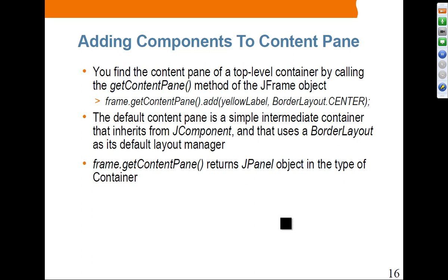You add components to the content pane. You find the content pane of the top-level container by calling the getContentPane method of the JFrame object. Then you can add — in this case — a yellow label using the border layout manager with center alignment. The default content pane is a simple intermediate container that inherits from JComponent and uses border layout as the default layout manager. When you call getContentPane, it actually returns a JPanel object, so one of the primary examples of the content pane is JPanel.